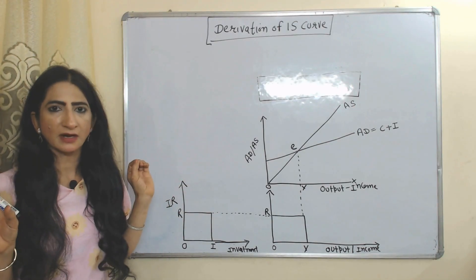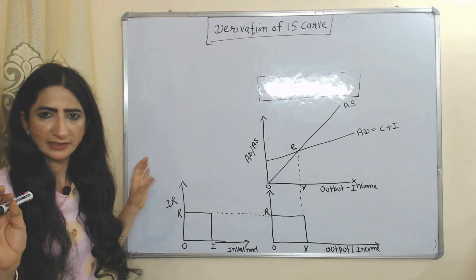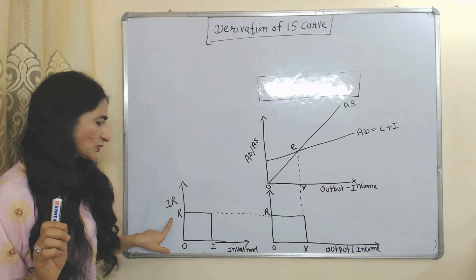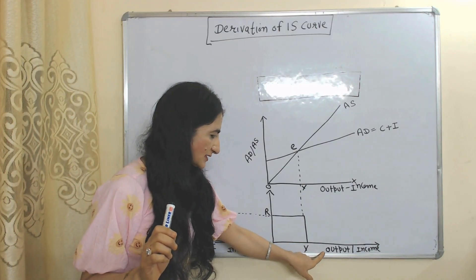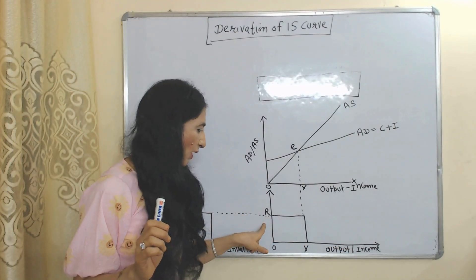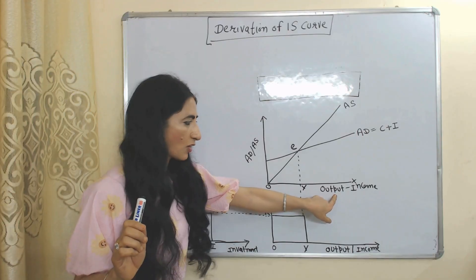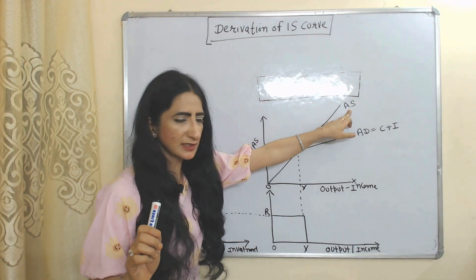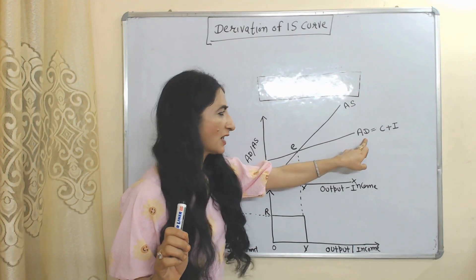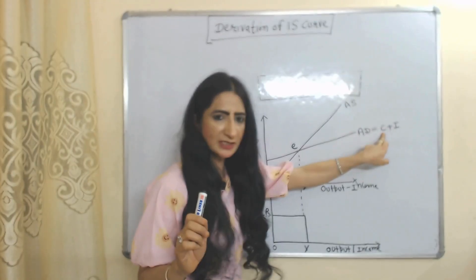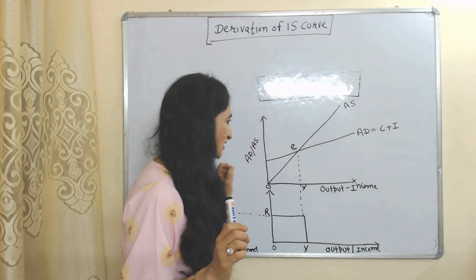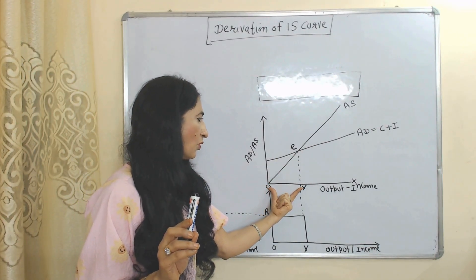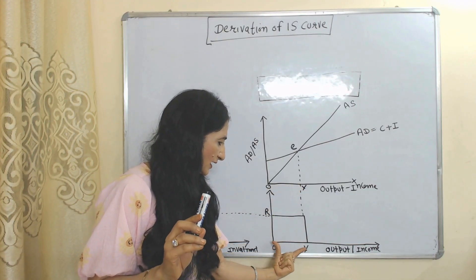Now we will see the derivation of the IS curve. We have three interconnected diagrams. In the first diagram, the X axis has investment and Y axis has interest rate. In the second diagram, X axis has output or income and Y axis has interest rate. In the third diagram, X axis has output or income, Y axis has aggregate demand and aggregate supply. The aggregate supply curve and aggregate demand curve AD equals consumption plus investment are shown, with initial equilibrium at point E.